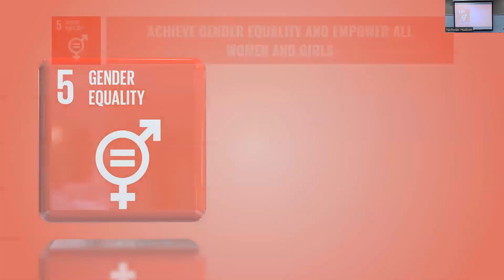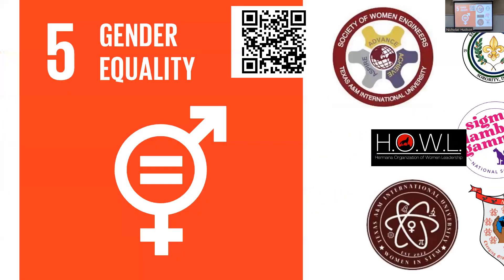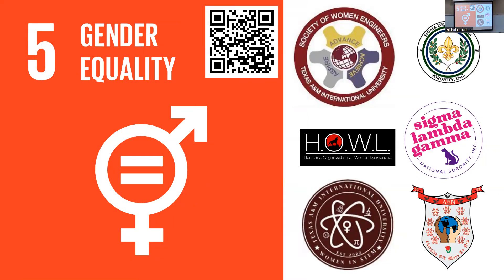SDG Number Five is Gender Equality. We are working to achieve gender equality and empower all women and girls. Target 5.1 aims to end all forms of discrimination against all women and girls everywhere. Organizations working toward this include the Society of Women Engineers, our sororities on campus, the Leadership Organization for Women, and Women in STEM here at the university. Our fraternities working to increase education among Latino men are also part of SDG Four. You all are already working towards these goals — it's a collective effort.